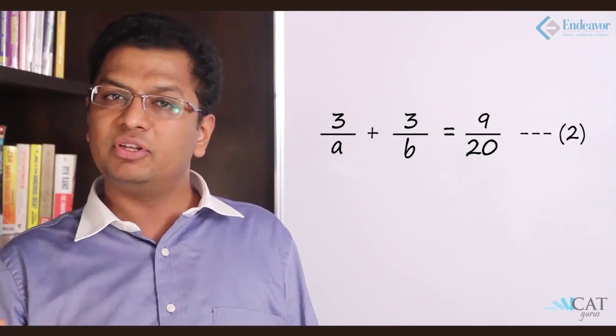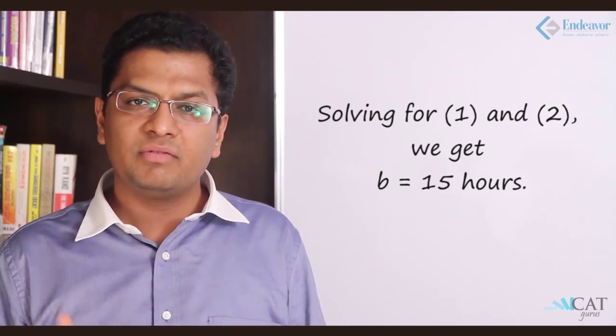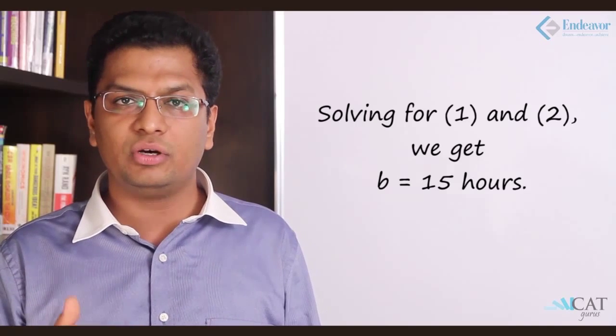Why 9 upon 20? Because half the work was done earlier. 1/20th is still left. So what is left? 9 upon 20. 10 upon 20 was left after the initial part. So 1 by 20 is left. So 10 by 20 minus 1 by 20 gives us 9 upon 20. Solving both of them, we get B takes 15 hours to close the job.